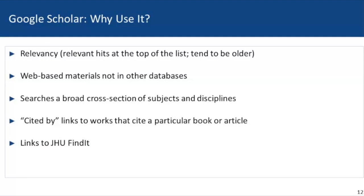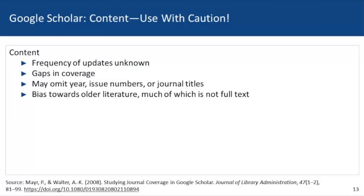So why use Google Scholar? Scholar orders relevant hits at the top of the list, so it's easy to find something immediately on your topic. It offers web-based materials such as video, pictorial, and audio that are not available in other databases. Unlike subject-specific databases, Scholar searches a broad cross-section of subjects and disciplines. The "cited by" link connects you to works that directly cite the results you're viewing, and Scholar also links to the Hopkins Gold Find It icon.